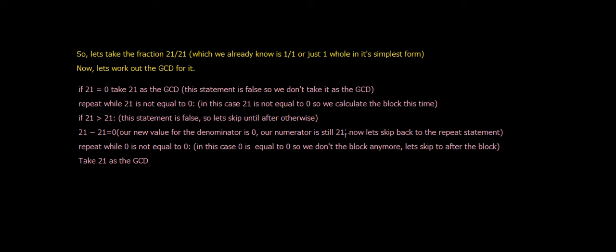Now let's skip back to the repeat statement. Repeat while zero is not equal to zero. In this case, zero is equal to zero, so we don't do the block anymore. Let's skip to after the block. Take 21 as the GCD.